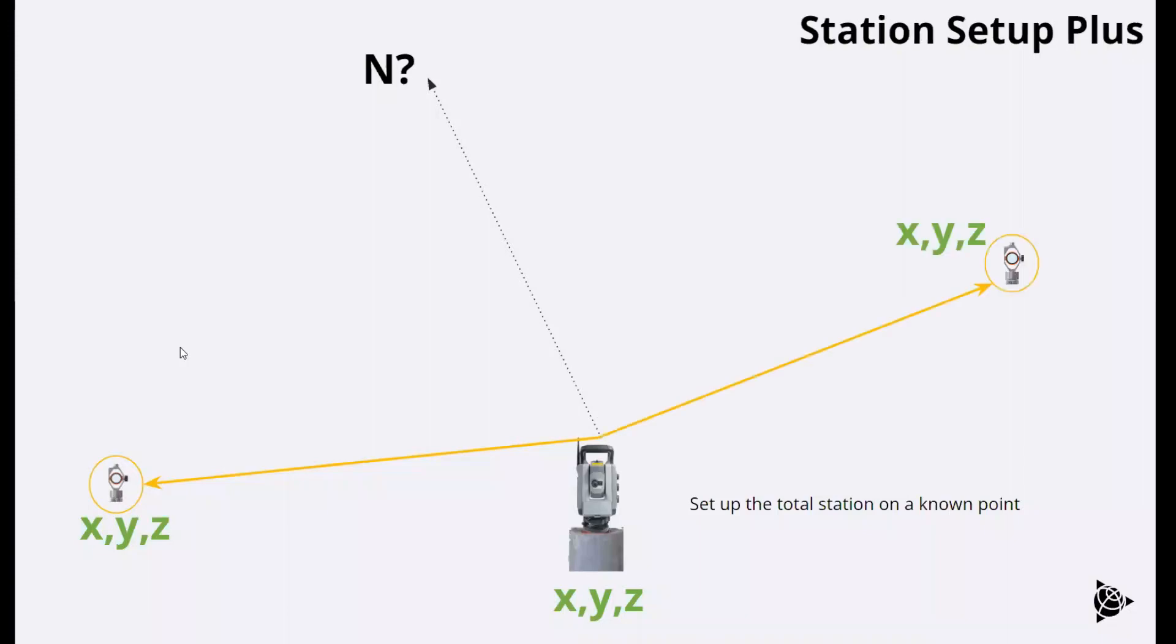To improve the accuracy and improve the reliability of the survey that we're doing, we can add a second back site to the mix or what we call a station setup plus: total station at a known location, one back site to give us orientation, and then another back site to help with the orientation and also to give us some sort of quality check that we're able to determine if anything is out of bounds, if one of the coordinates may be off, or just add some redundancy to the mix and make sure that we're calculating the correct position for all the targets.